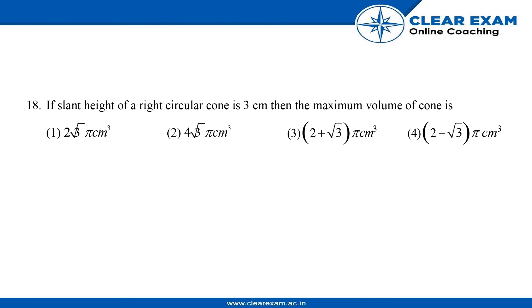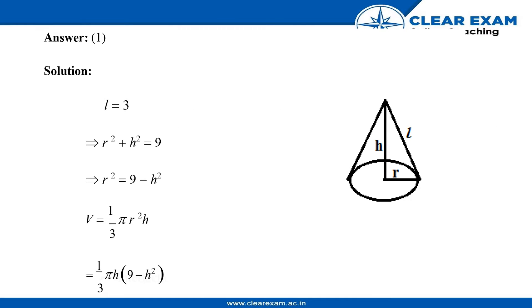If slant height of a right circular cone is 3 cm, then the maximum volume of cone is: (1) 2√3π cm³, (2) 4√3π cm³, (3) 2+√3π cm³, and (4) 2-√3π cm³. Now solving this question, as we can know we are provided with the...